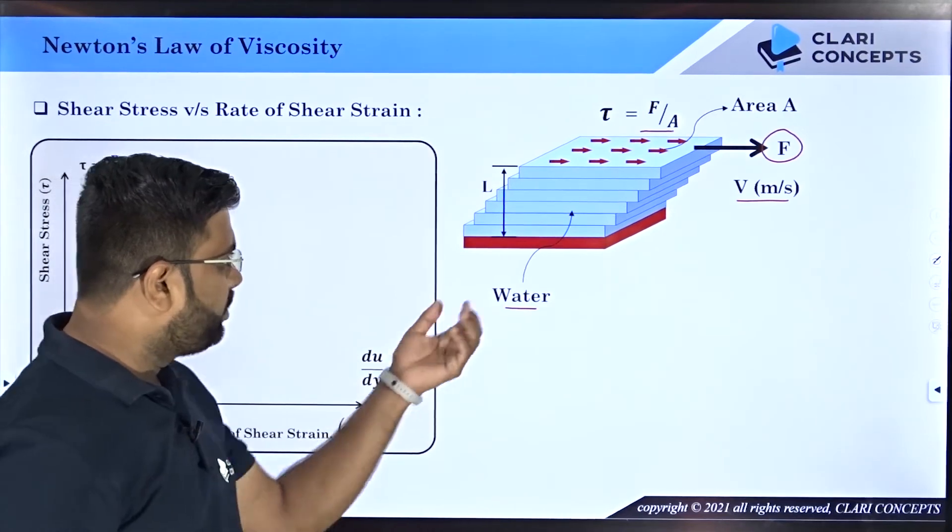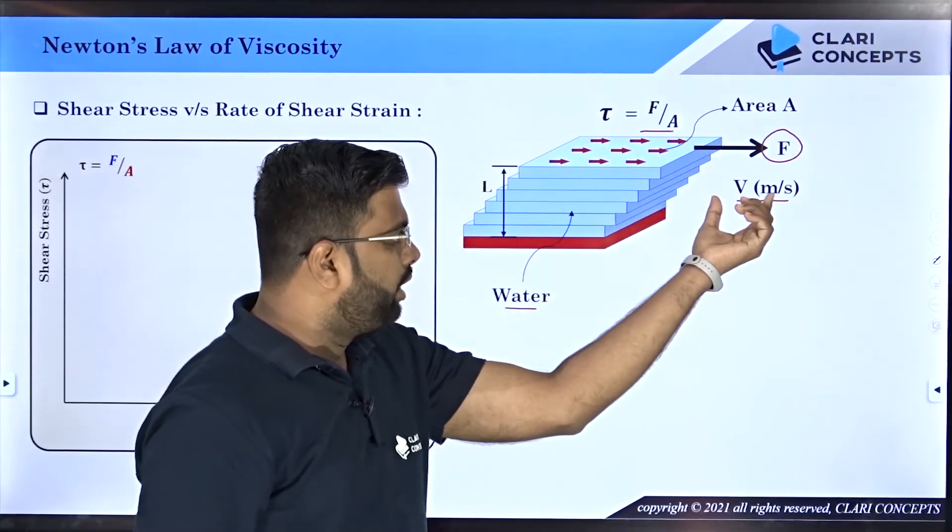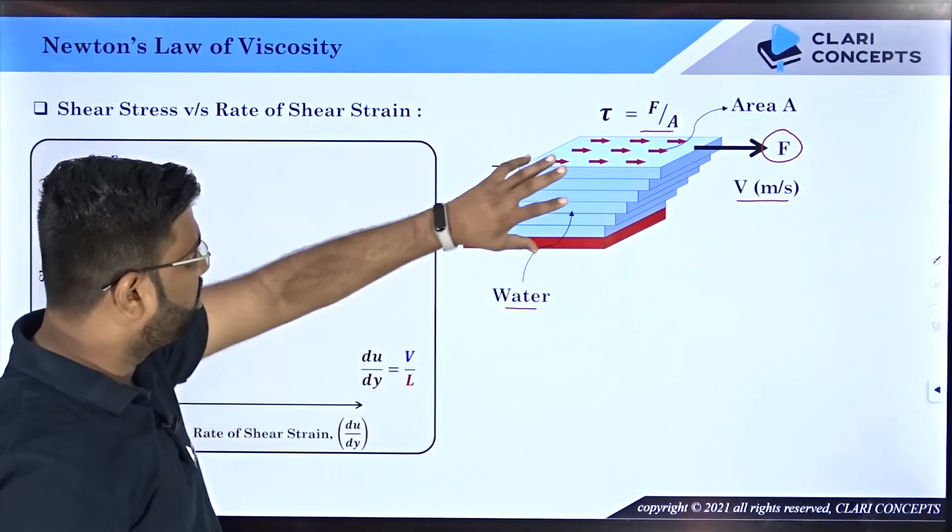The rate of shear strain du/dy is nothing but the ratio of velocity by L, where V is the velocity of the topmost layer (V meters per second) and L is the distance between the two plates.